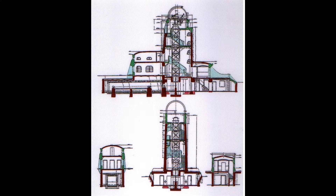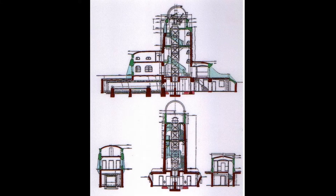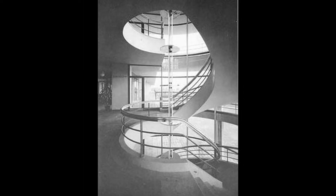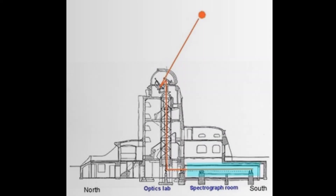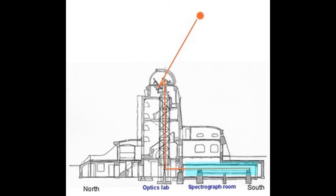Even though the sculpted concrete structure proved difficult to execute with the technological capabilities of the time, the Einstein Tower remains Mendelssohn's best-known building. The war-ravaged German economy of 1921 impeded its construction, and the scientific agenda of its patron, Erich Finlay Feinberg, which determined the character of its interior spaces, also helped shape its final appearance.